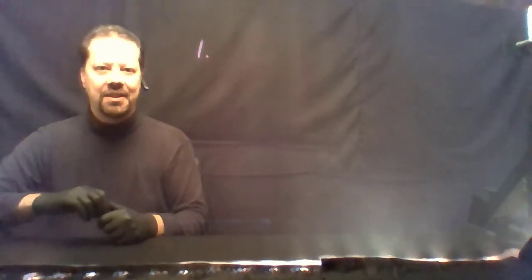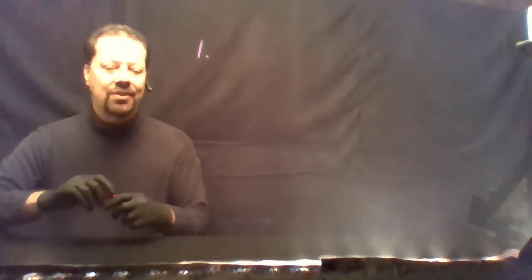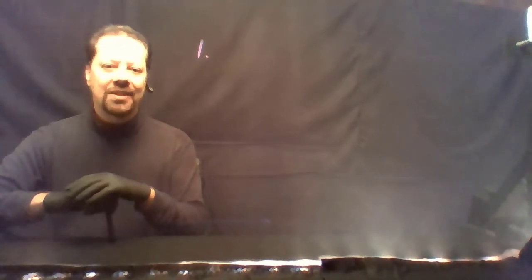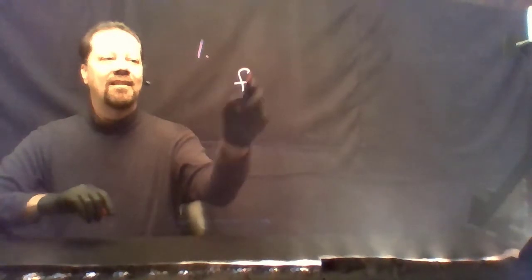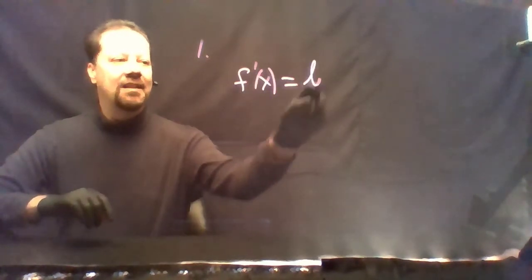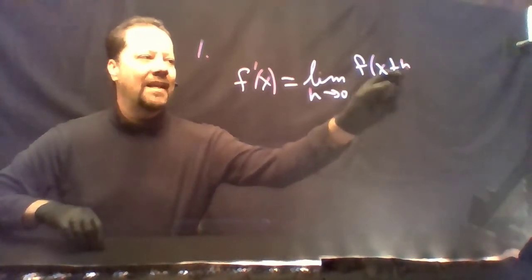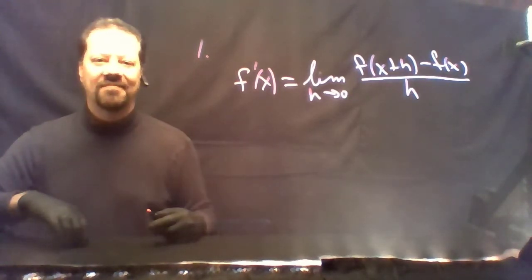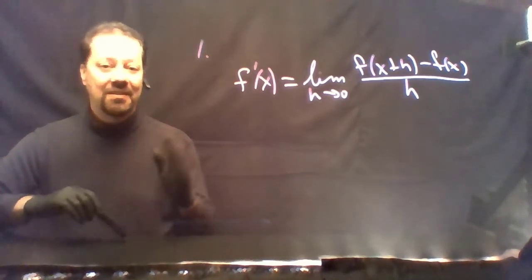State the definition of the derivative. You're going to use this definition again in Calculus 2 and Calculus 3, so you may as well memorize it now. After all, the one distinguishing characteristic of mathematics is that words actually mean things. f prime of x is the limit as h goes to 0 of f of x plus h minus f of x, all over h. Easy as that — you know the first question on the exam and the first answer.